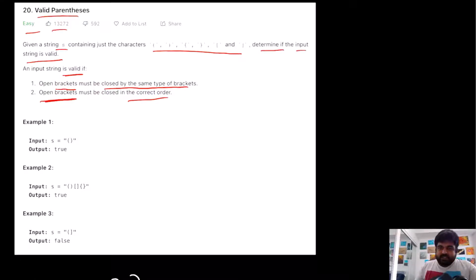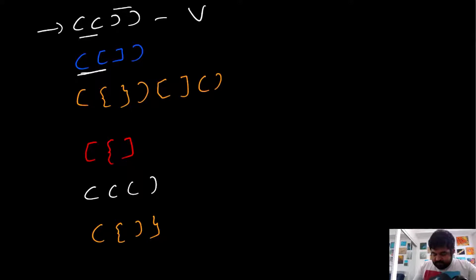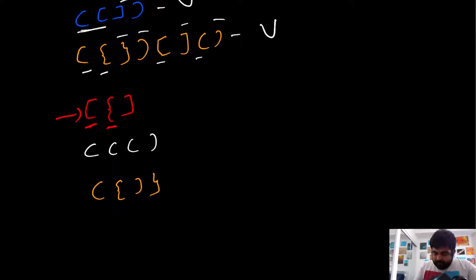Let's try to understand this with some examples. First, if we have two opening brackets and two closing brackets of the same type, we can consider this as a valid string. Again, if we have two different types of opening brackets with their corresponding closing brackets, this is also a valid string. We can also have nested brackets — as long as everything is opened and closed in the same kind and correct shape, we can consider it a valid format.